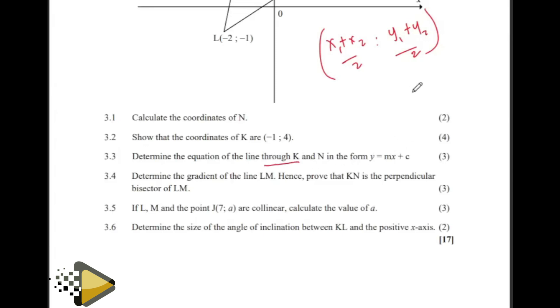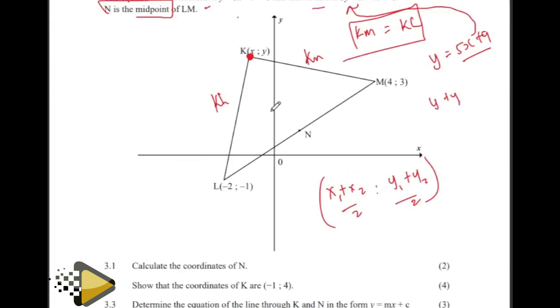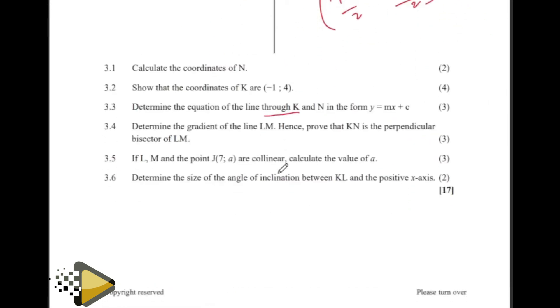Then the equation of a line that is passing through K and N. You know the coordinates of N, we know the coordinates of K. You just need to get the gradient, which is the M, and then get the Y-intercept. Then you're good to go.